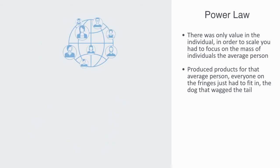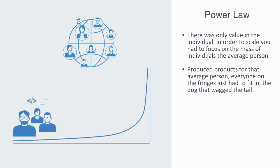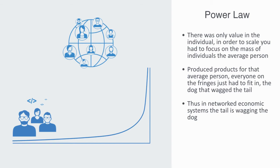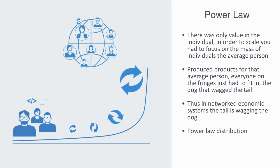When we switch from the industrial model of economics of scale with isolated consumers to the post-industrial model of the network effect with connected users, this changes — as it is now the geeks and outliers that matter. Because of the thresholds and feedback loops, they're the ones driving the process of change. Thus, in networked economic systems, it's the tail that wags the dog. Behind this is the power law distribution that we've met many times already — common to all kinds of complex systems. Because of non-linear feedback, it is able to amplify some small phenomena on the fringes and turn it into a macro mainstream phenomena.